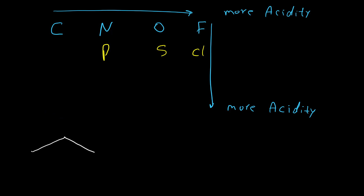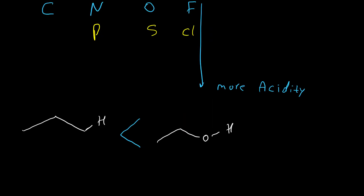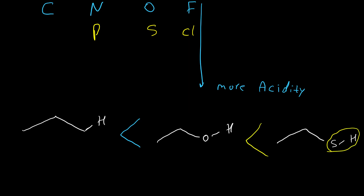For example, let's compare these two molecules: propane and ethanol. Here we have OH and here we have CH. Based on this trend, oxygen has more acidity, so ethanol should be more acidic. But if we compare ethanol to ethanethiol, we see that sulfur is more acidic compared to oxygen in a similar structure. Because we have SH here and OH there, the molecule with the SH functional group is more acidic.